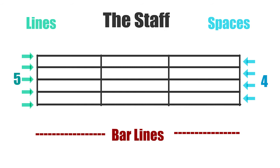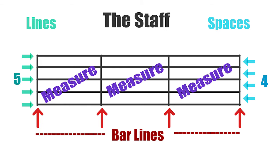Bar lines are used to create measures on the staff. They are drawn from up to down. They are vertical.